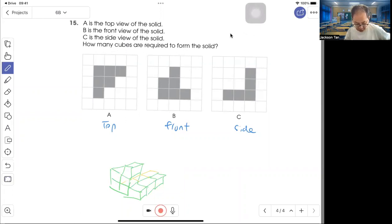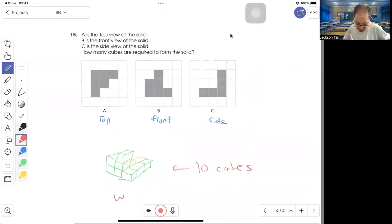So let's count how many are there: one, two, three, four, five, six, seven, eight, nine, ten. So it's ten cubes total. Thank you. Continue to practice more questions on e-learning website at www.studysingaporemaths.com. Thank you.